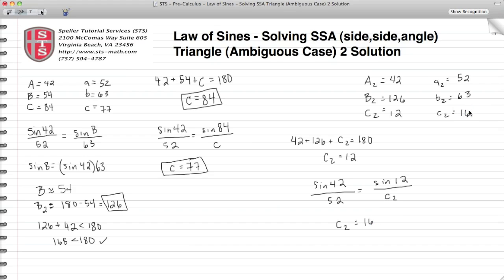So here we've taken an ambiguous case, and we've shown that there are two solutions, and we have all those solutions here in both of these charts.